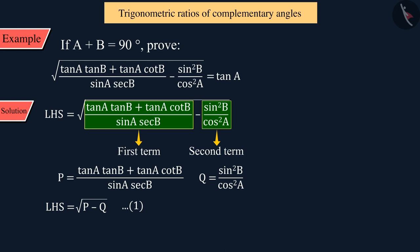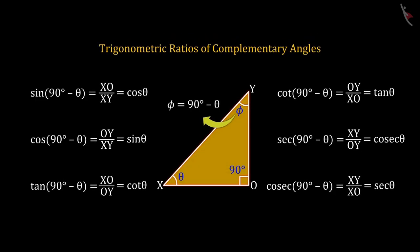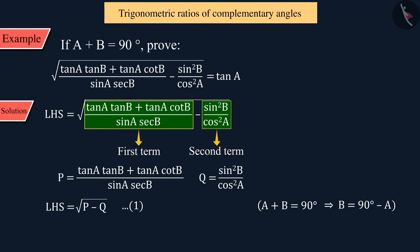Since it is given that A plus B is equal to 90 degrees, to solve these equations, we will use trigonometric ratios of complementary angles. Let us first simplify these two terms separately and find their values.